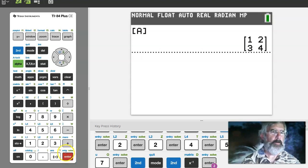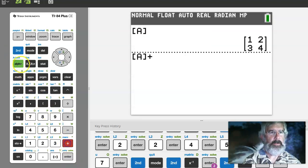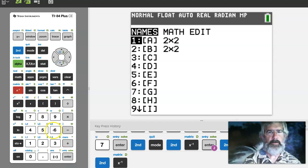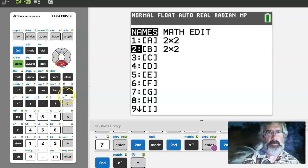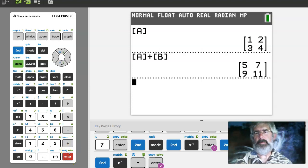1, 2, 3, 4. If I want to add the two together I could say matrix A plus matrix B. So I'm going to move down one and select the B. So there's A plus B. I hit enter and it adds the two together.